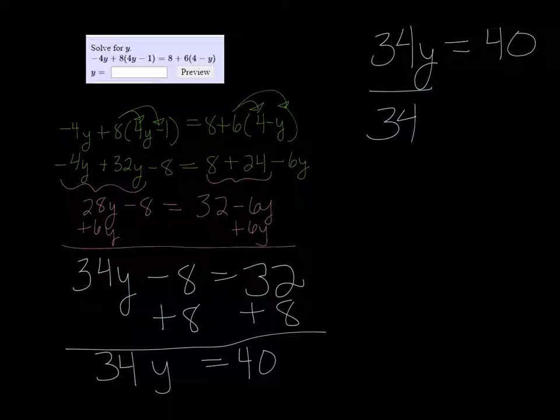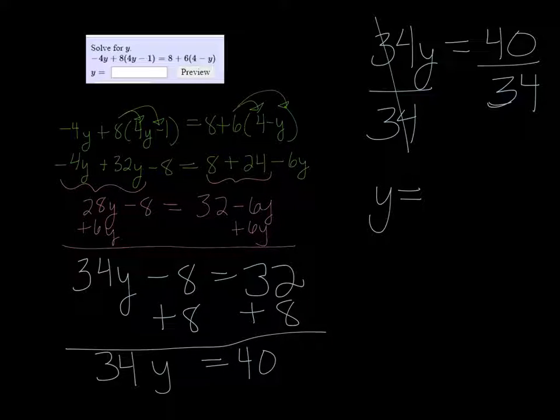So 34 divided by 34 is just 1, and 40 divided by 34 is reduced to, let's see, 20 over 17.